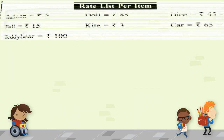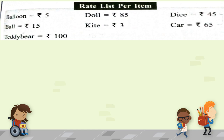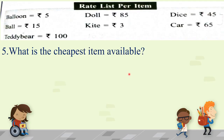Question number 5: what is the cheapest item available? Cheapest means sabse sasta — the item with the lowest cost. Let's look at the rate list. Balloon is 5 rupees, but kite is even cheaper at 3 rupees — that is the least cost of all items. All other items have higher prices. So the answer is kite.